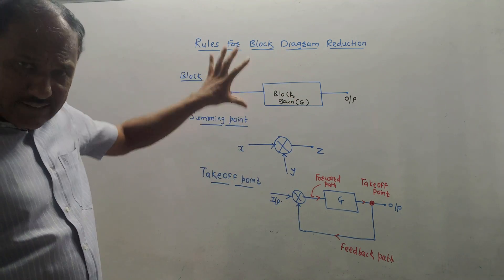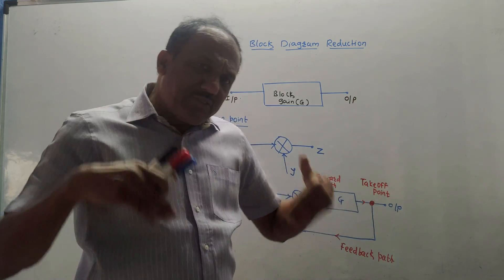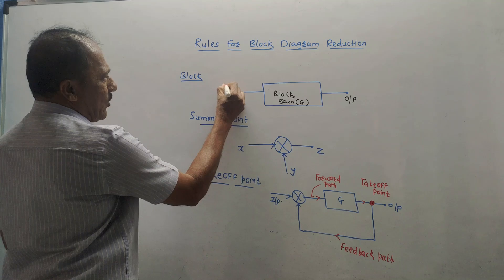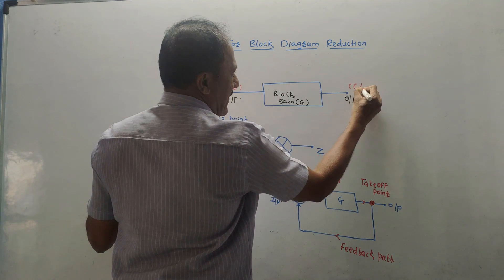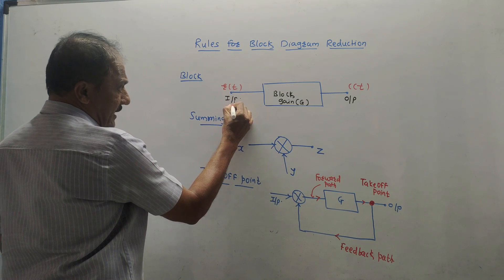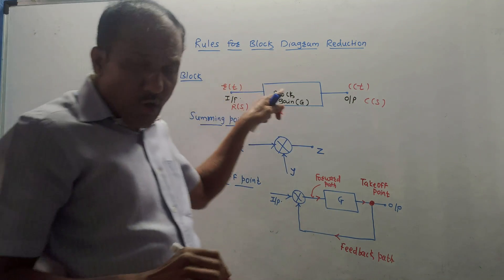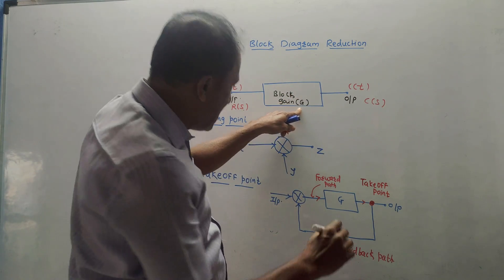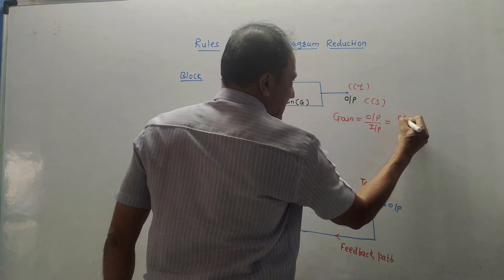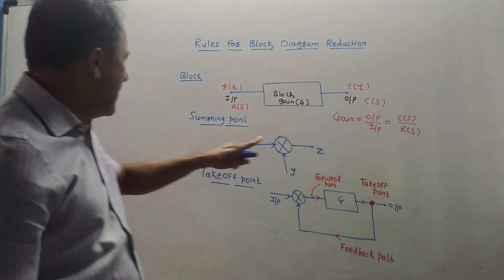Before starting the rules, I would like to explain a few basic things required for block diagram reduction. First, what is the meaning of a block? A block performs a certain operation or action on the input signal. In control systems, input is denoted by R(t) and output by C(t). In Laplace notation, these are written as R(s) and C(s). Every block has some gain, and the basic formula is: gain = output / input = C(s) / R(s).